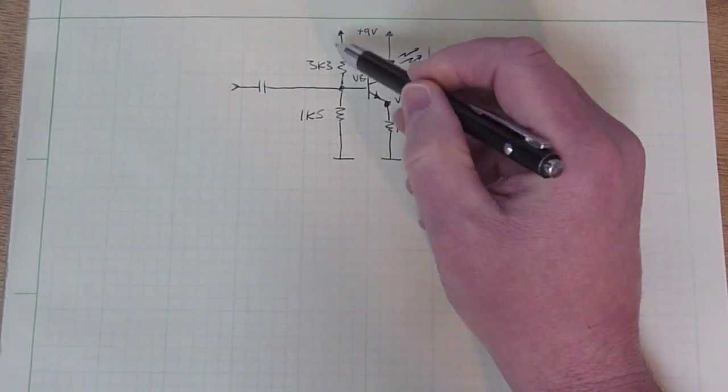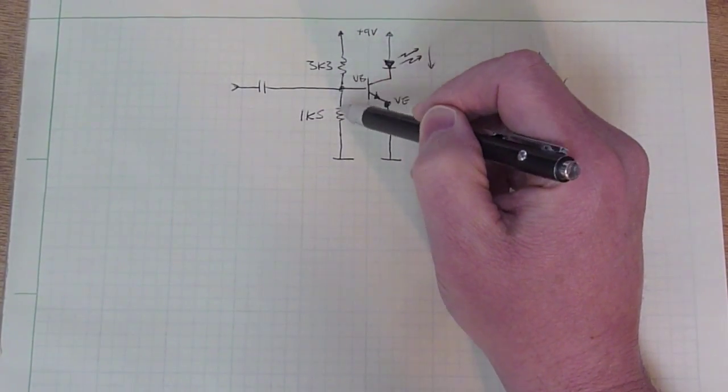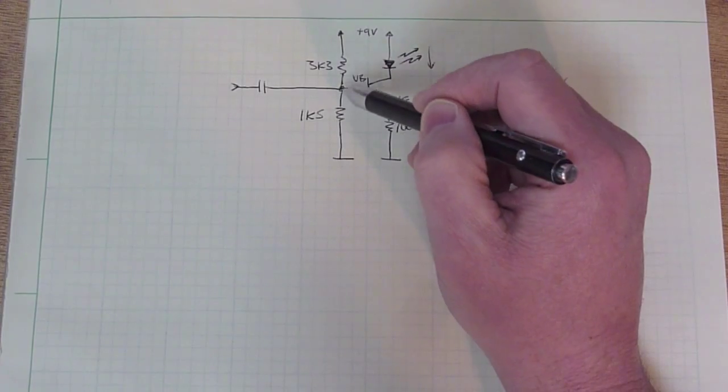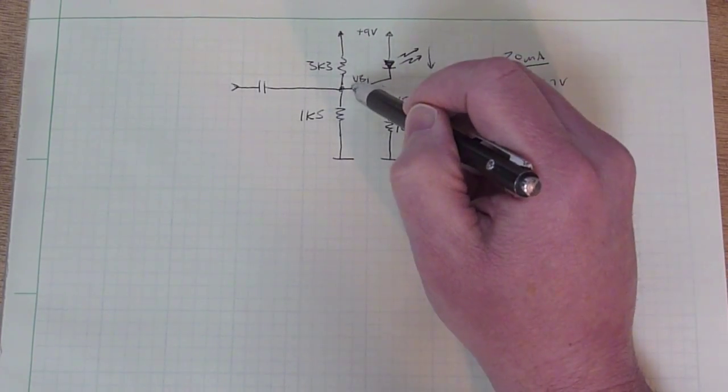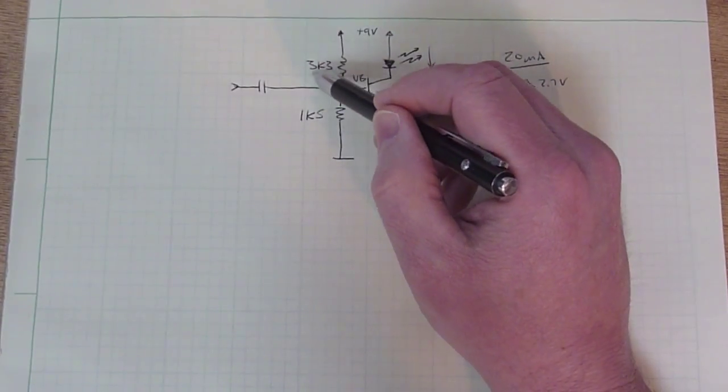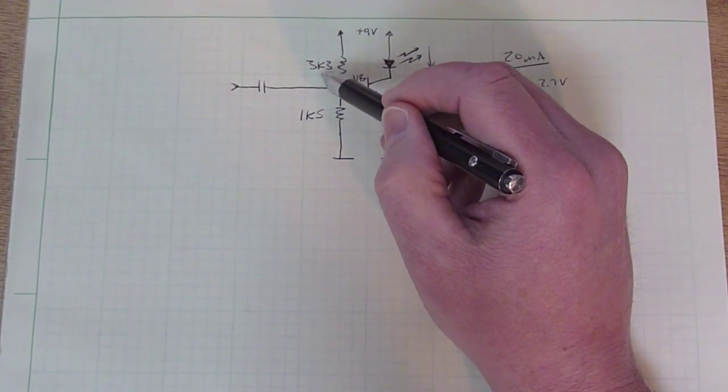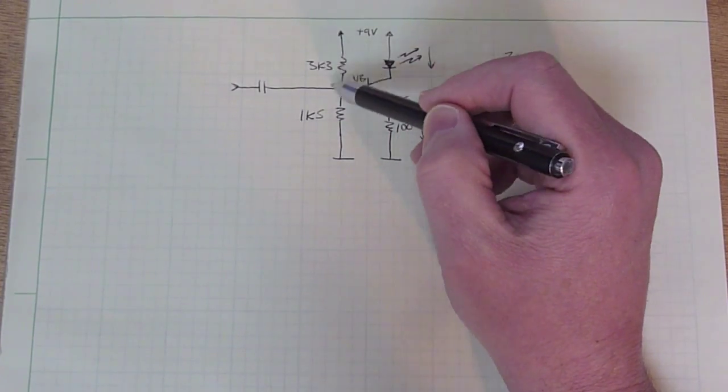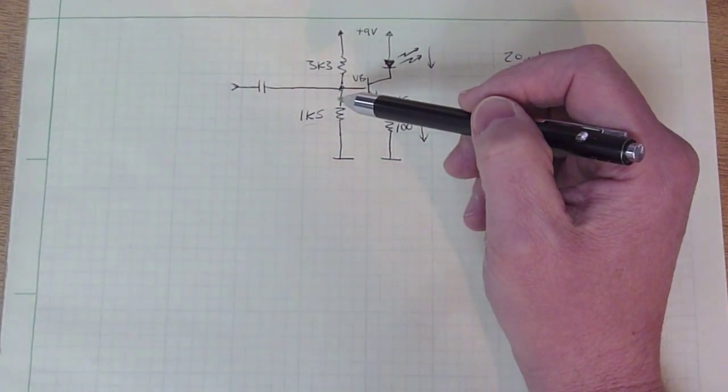Based on that, I designed this voltage divider which takes 9 volts and divides it and puts about 2.7 volts on the base. Now the resistor values that you get when you do that calculation won't be standard resistor values. So these are actually standard values that are the closest to my calculation.